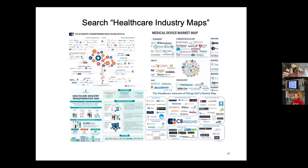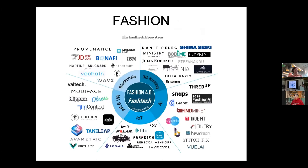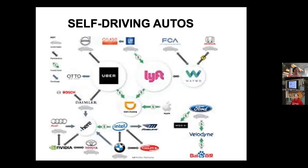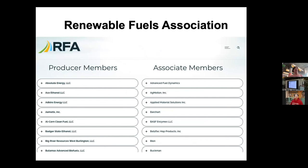There is an industry map for every industry. Search 'healthcare industry maps' and multiple will come up — one showing 106 startups in healthcare, others covering medical devices, internet of things, drones, fashion, chemicals, and self-driving autos. These maps show which organizations are participating and their role in the ecosystem.